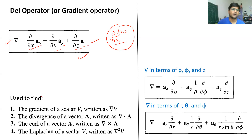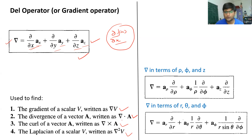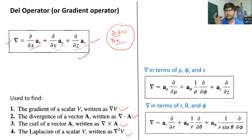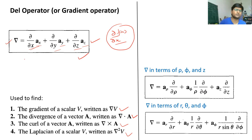The del operator is used to calculate the gradient of a scalar, the divergence of a vector, the curl of a vector, and the Laplacian of a scalar. We are going to study all these in further lectures. Since we have studied three coordinate systems — Cartesian, spherical, and cylindrical — we will represent del in all three. This was the Cartesian representation.